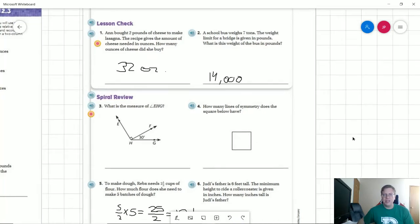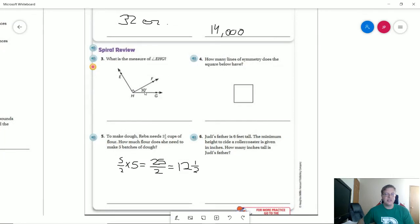For number 3, we are working with an angle that is given as 30 degrees, and then this is given as 90 degrees. So all I need to do is add both of those together. That gives us 120 degrees.